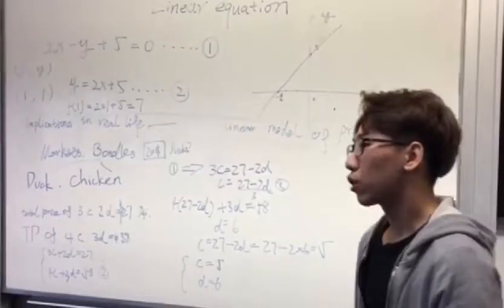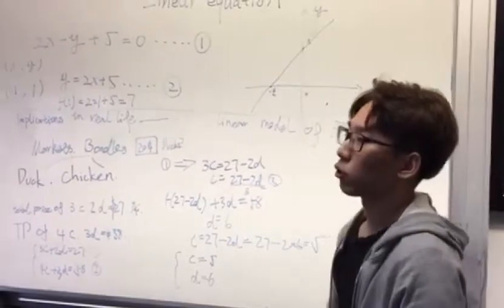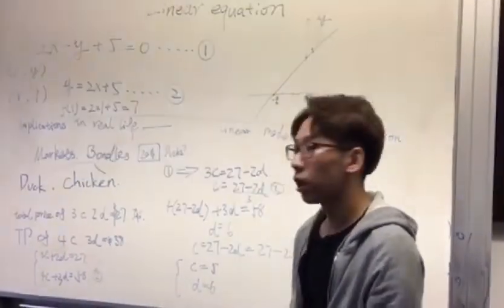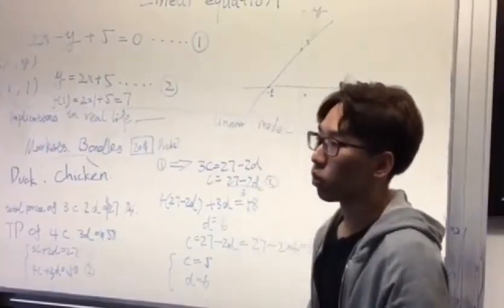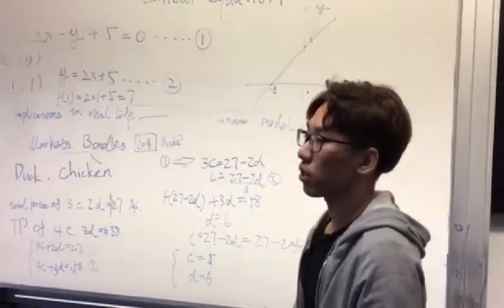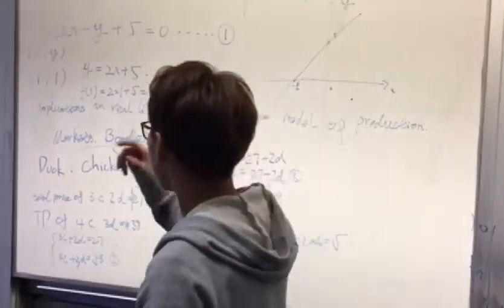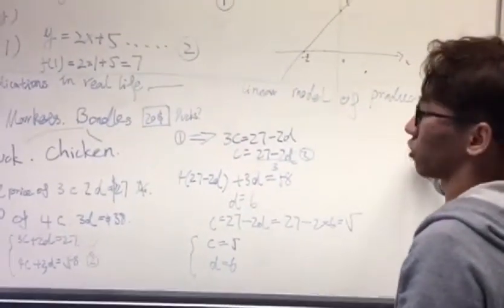Many economic relationships can be approximated by linear equations, and others can be converted to linear relationships. So the analysis of many economic models reduces to the study of systems of linear equations. Here I'm going to talk about implications in real life using a linear model of production.